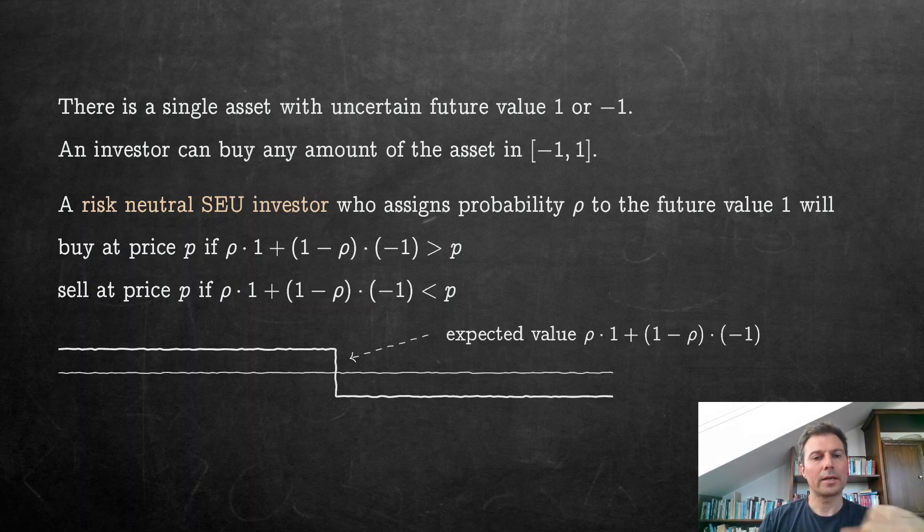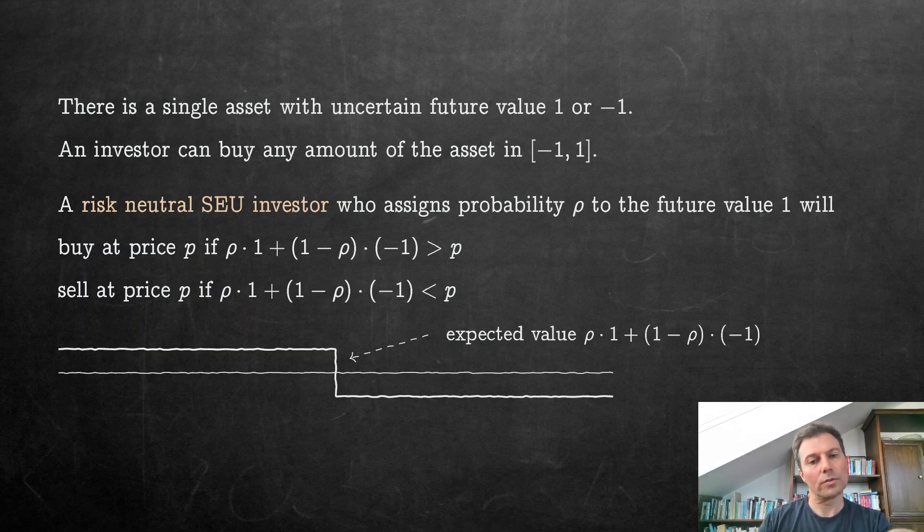So this is schematically what it looks like. On the left-hand side, you have low prices, that means you're buying, you're positive on this demand, this is your sort of demand function, and then the demand jumps down, and you're selling suddenly after the expected value. So this is what a subjective expected utility maximizer would do. But it turns out, and this is what Dow and Werlang pointed out, that an ambiguity-averse decision maker could have a different demand function.